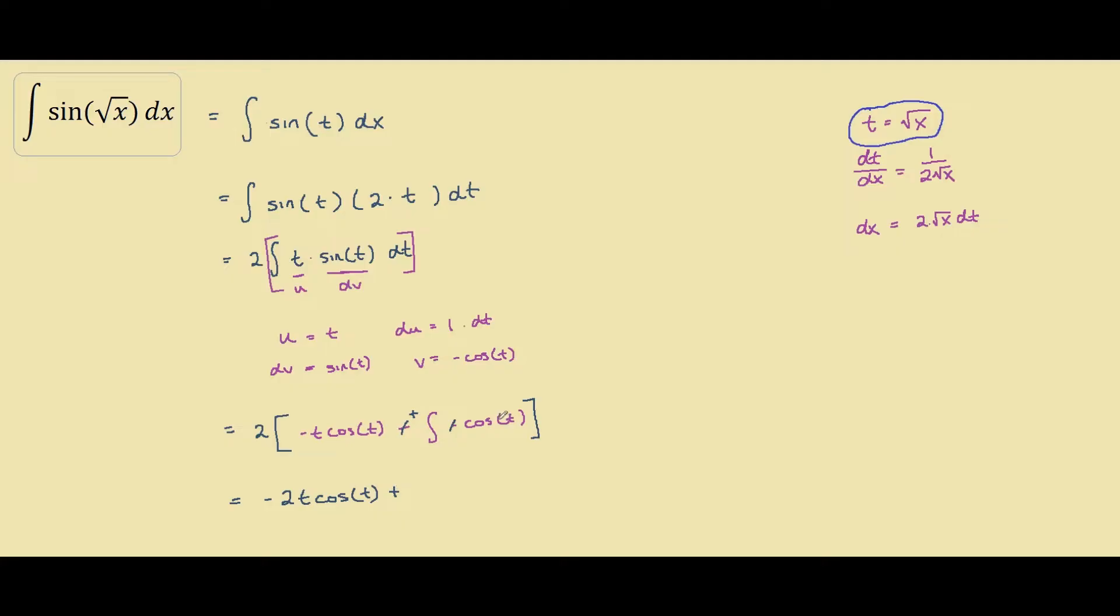And our integral of cosine t is sine t times the 2 in front, plus c.